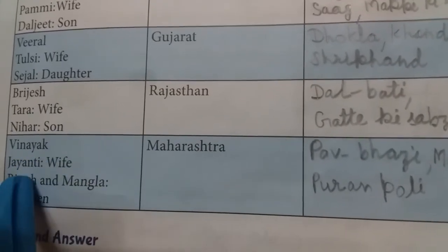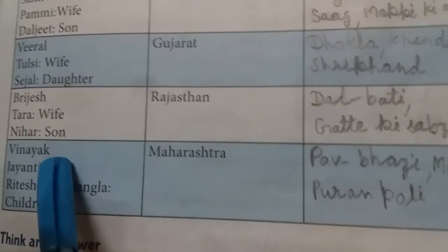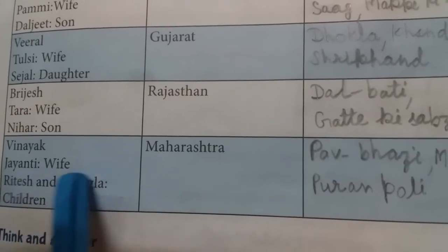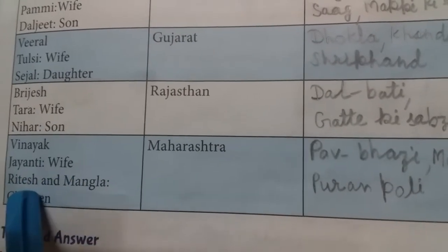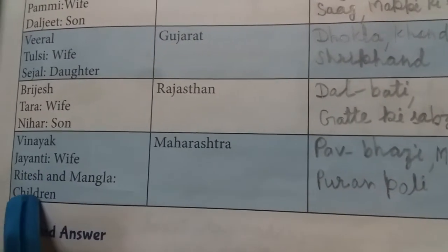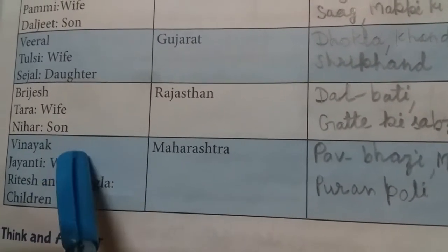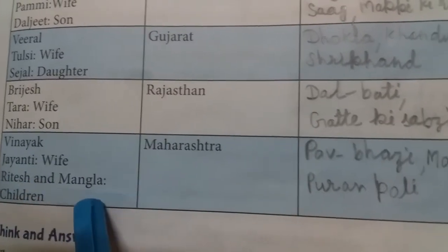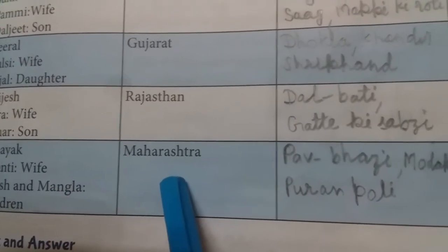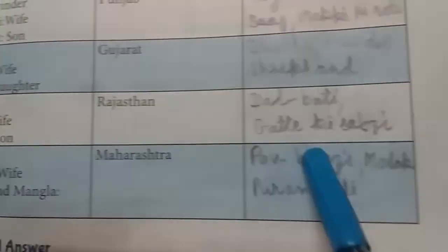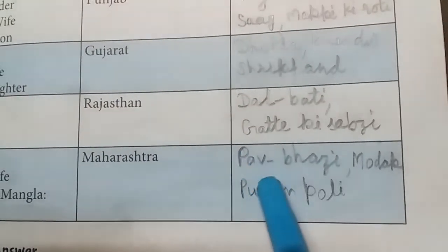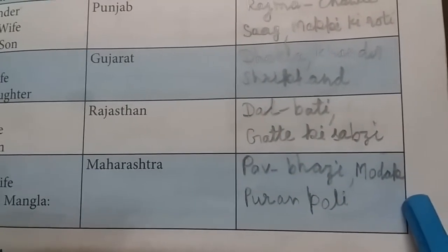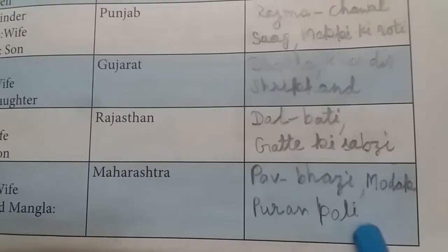The next family: husband's name is Vinayak, wife's name is Jyanty, and their children are Ritesh and Mangla. Vinayak, Jyanty, Ritesh, and Mangla belong to Maharashtra. Their favorite food is Pao Bhaji, Modak, and Puran Poli.